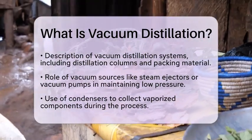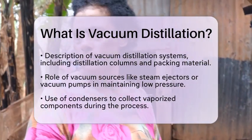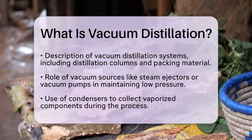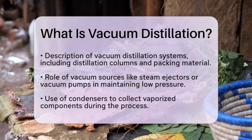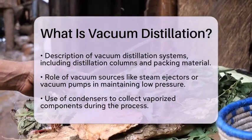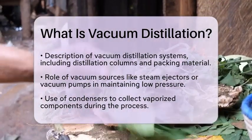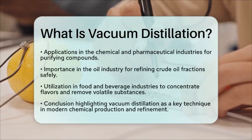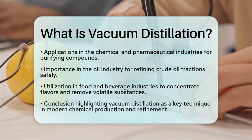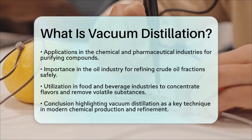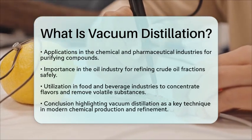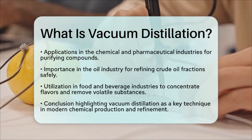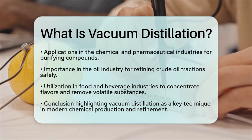Vacuum distillation has many applications across various industries. In the chemical and pharmaceutical sectors, it is commonly used to purify heat-sensitive compounds and separate complex mixtures. In the oil industry, it plays a vital role in refining crude oil fractions that cannot be distilled at atmospheric pressure without decomposing. The food and beverage industries also utilize vacuum distillation to concentrate flavors or remove unwanted volatile substances without harming the product.